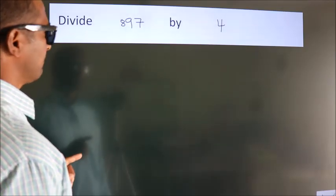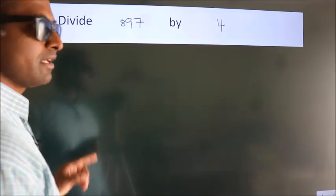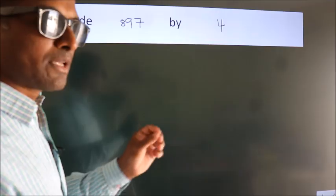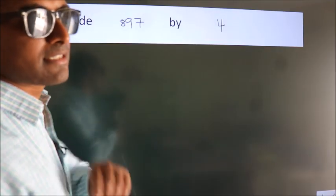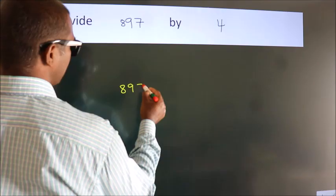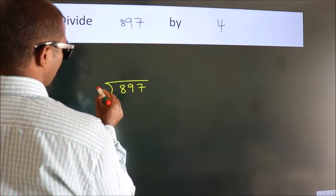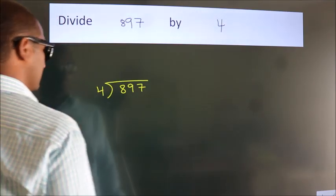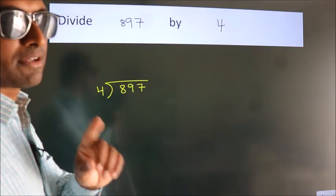Divide 897 by 4. To do this division, we should frame it in this way: 897 here, 4 here. This is your step 1.